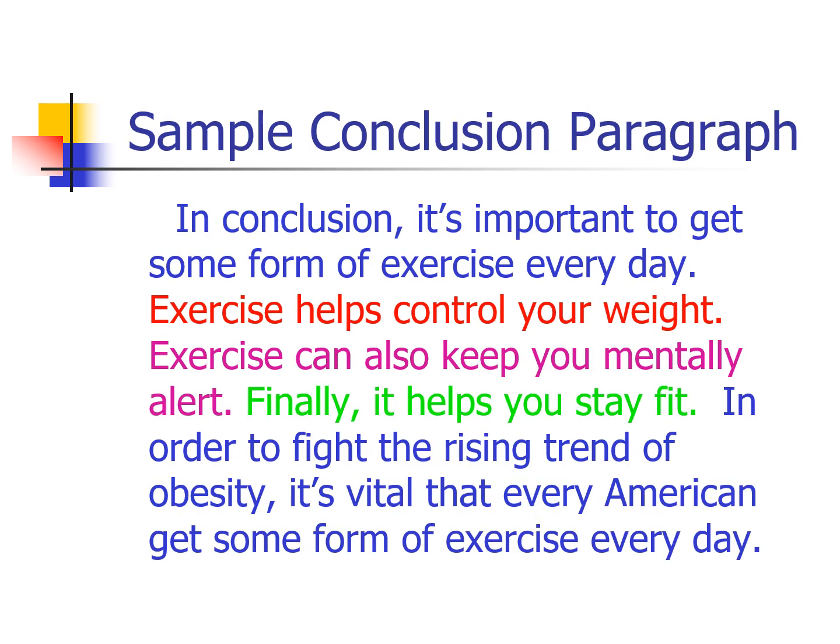Finally, down to the conclusion — paragraph number five. 'In conclusion,' — I've also started with a transition word here — 'it's important to get some form of exercise every day.' The first sentence in your conclusion is a restatement of your thesis, to remind your reader what your essay was about. Then you summarize, picking out the most important things you discussed: 'Exercise helps control your weight. Exercise can also keep you mentally alert. Finally, it helps you stay fit.' And then the clincher: 'In order to fight the rising trend of obesity, it's vital that every American get some form of exercise every day.' So: restatement of the thesis, a summary of what you talked about, and then the clincher — which is basically the writer's opinion or feeling about the topic.